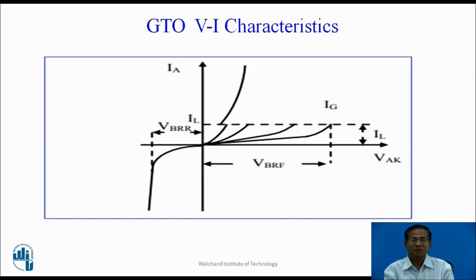GTO VI characteristics. As long as input voltage is less than the forward breakover voltage, the GTO remains off. When we apply the gate pulse, the forward breakover voltage reduces and the device gets latched into the conducting state. By increasing the gate current IG, the forward breakover voltage reduces further. When we apply reverse voltage, the device remains in the reverse blocking state. Whenever the reverse voltage crosses a particular limit, VPRR, the device enters the reverse breakdown region and there is a possibility of damaging the device; that is why this region is avoided.